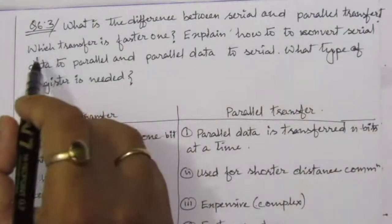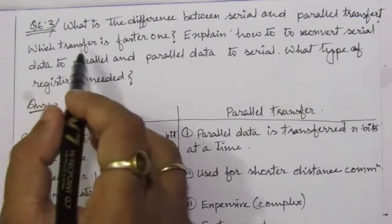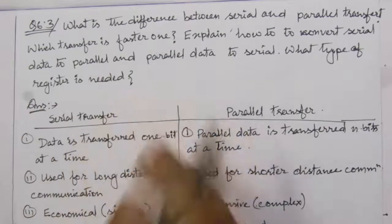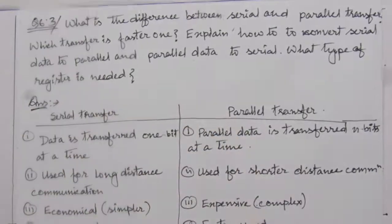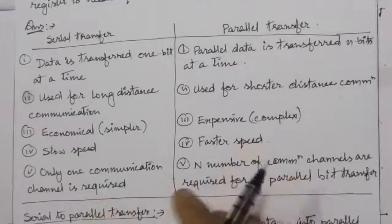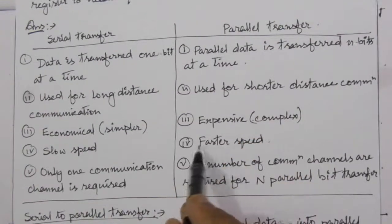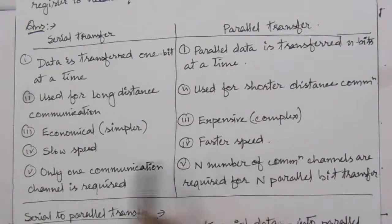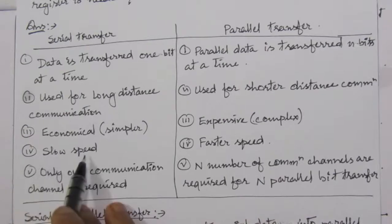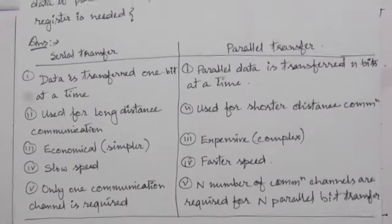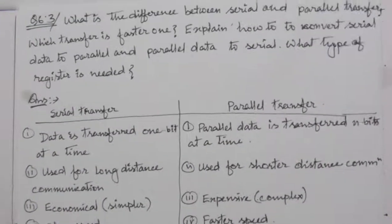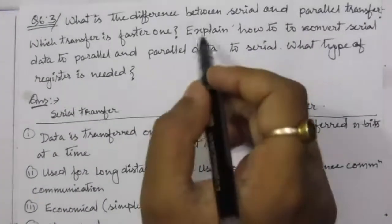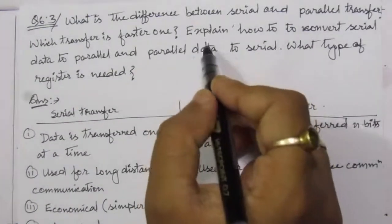In the next part, we are asked which transfer is faster. We have seen that parallel transfer has faster speed while serial transfer has slower speed, so parallel transfer is the faster one.